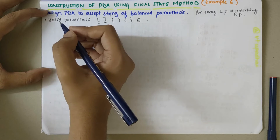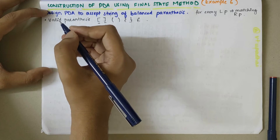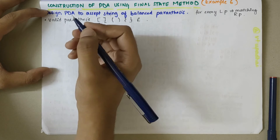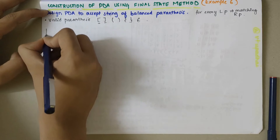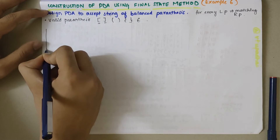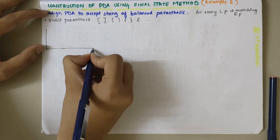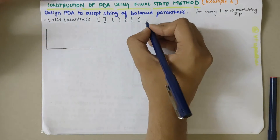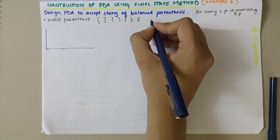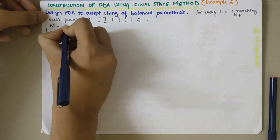Let Q0 be the start state. Initially the stack is empty. Before proceeding, we will take a string — assume a string W is equal to a specific example string.